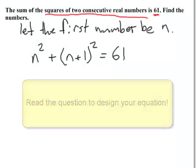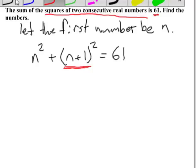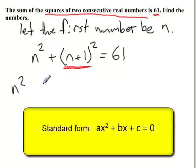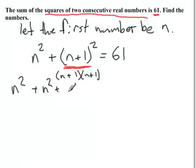Now I need to expand the squared binomial so that I can get to standard form. So leave the n squared alone. When I do that, it's like doing FOIL of n plus 1 times n plus 1. So this will leave me with n squared plus 2n plus 1, and that's still all equal to 61.